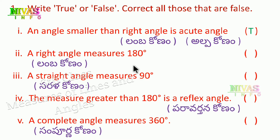Second problem: a right angle measures 180 degrees. A right angle measures 90 degrees, so this is false. Correct answer: a right angle measures 90 degrees.